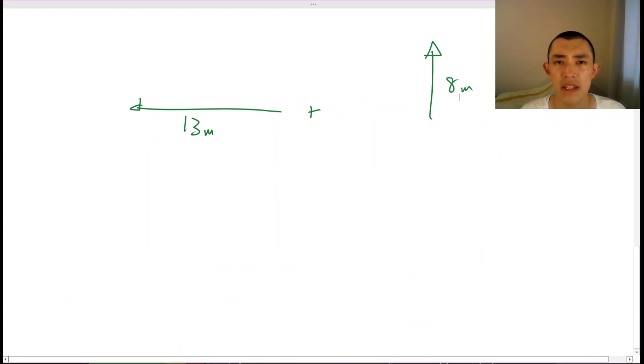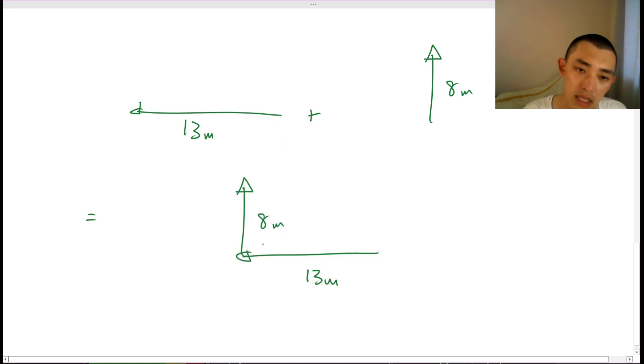So let's have a look at this example. We have one vector pointing towards the left at 13 meters, with another vector pointing upwards at eight meters. Let's have a go at this. So we can do, again, the tip to tail. So I'll put my 13 meters here. So we want to put this vector, the second vector, at the tip of the first one, right? So I'm going to grab this vector and I'm going to put it here. Again, we can see we have tip of this 13 meter vector to the tail of this 8 meter vector.